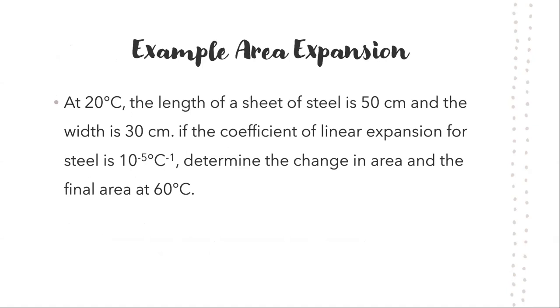An example of area expansion. At 20 degrees Celsius, the length of a sheet of steel is 50 centimeters, and the width is 30 centimeters. If the coefficient of linear expansion for steel is 10 to the negative 5 degrees Celsius to the negative 1, determine the changing area in the final area at 60 degrees Celsius. You can go ahead and pause the video to solve this example.